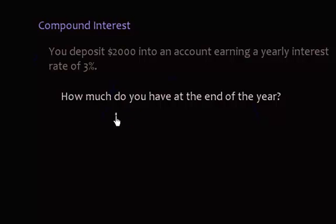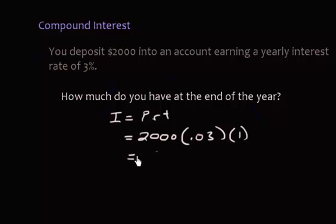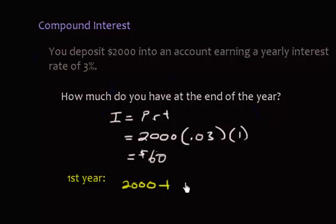First, let's figure out how much interest we have using the formula I = PRT. The principal is two thousand dollars, the interest rate is 3% per year, and it's only going to be one year, giving us an interest amount of $60. So at the end of the first year we're going to have two thousand dollars plus $60 interest, which equals $2,060.